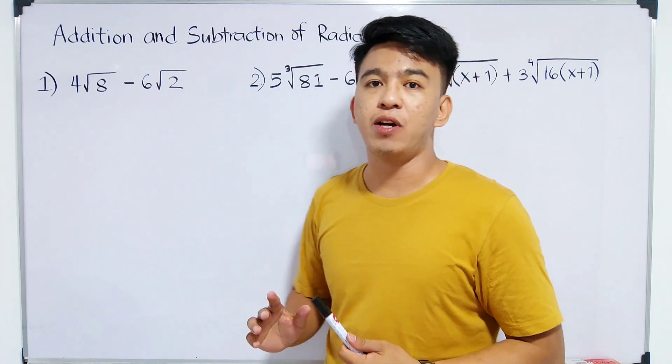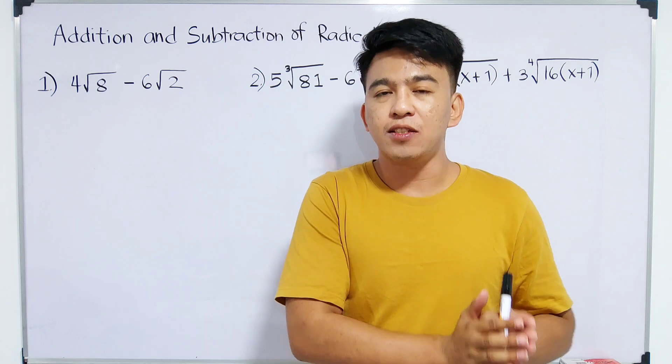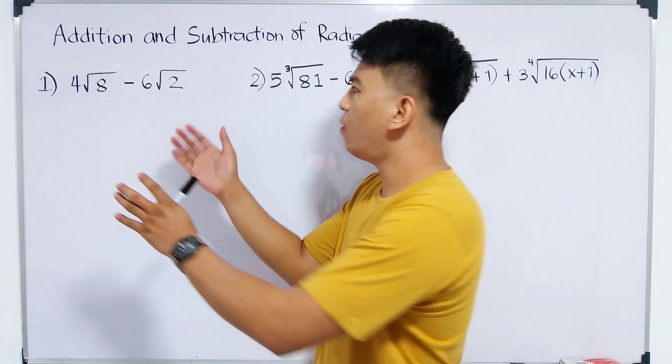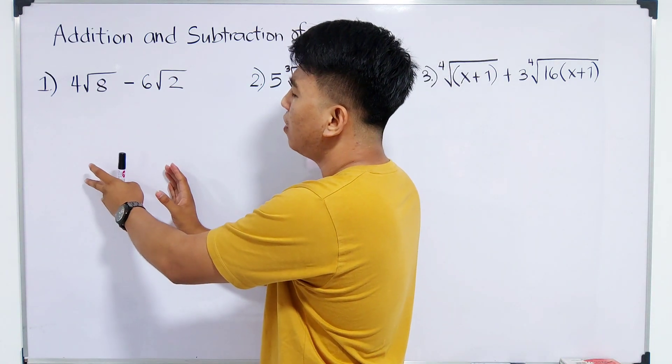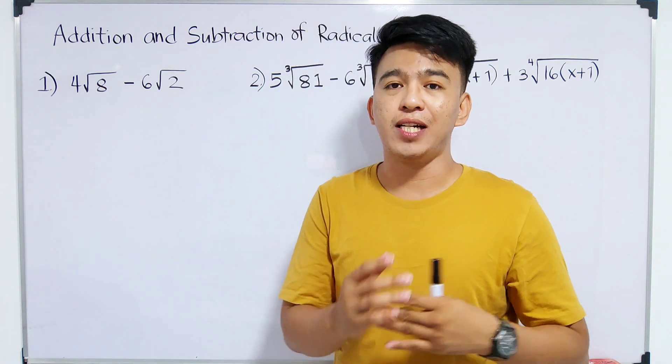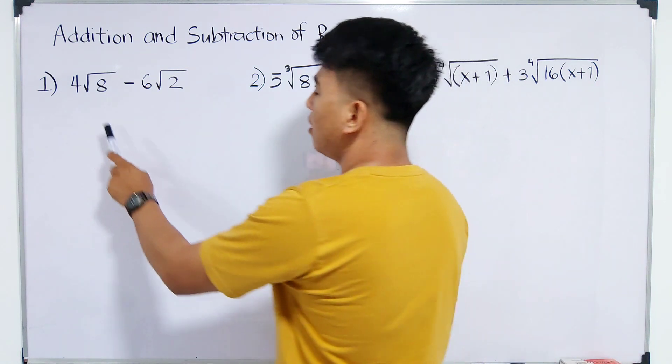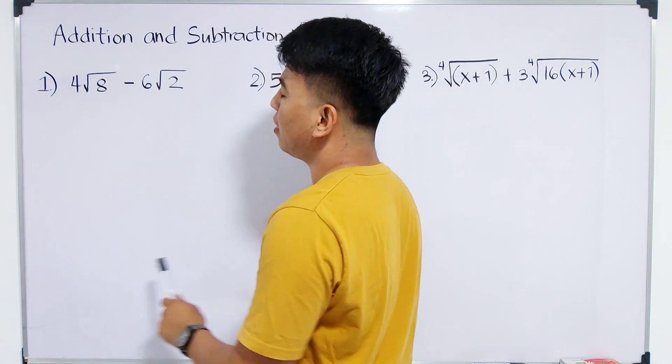Now, this is the problem because our rule is we can add radicals with the same radicand. So how are we going to subtract this radical when they have different radicands? Of course, we have a way to do this. First, they need to be the same, right?